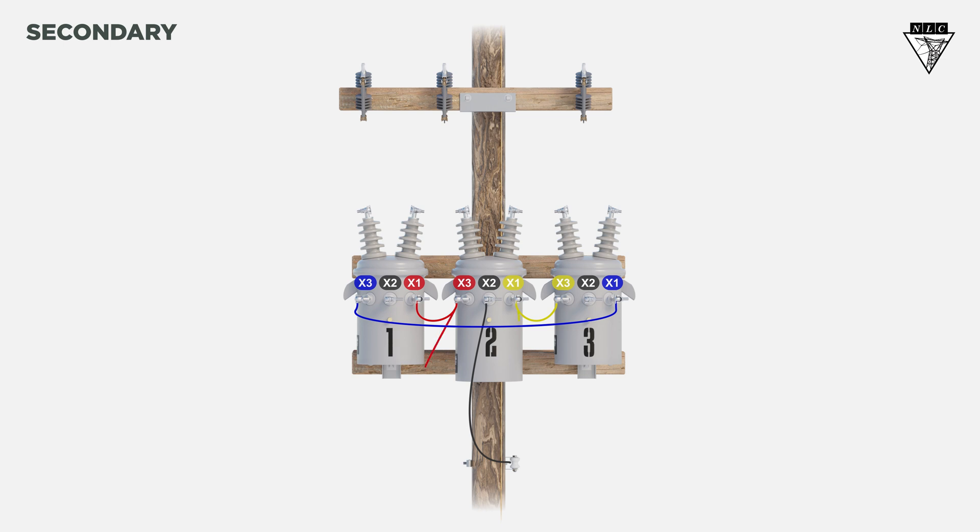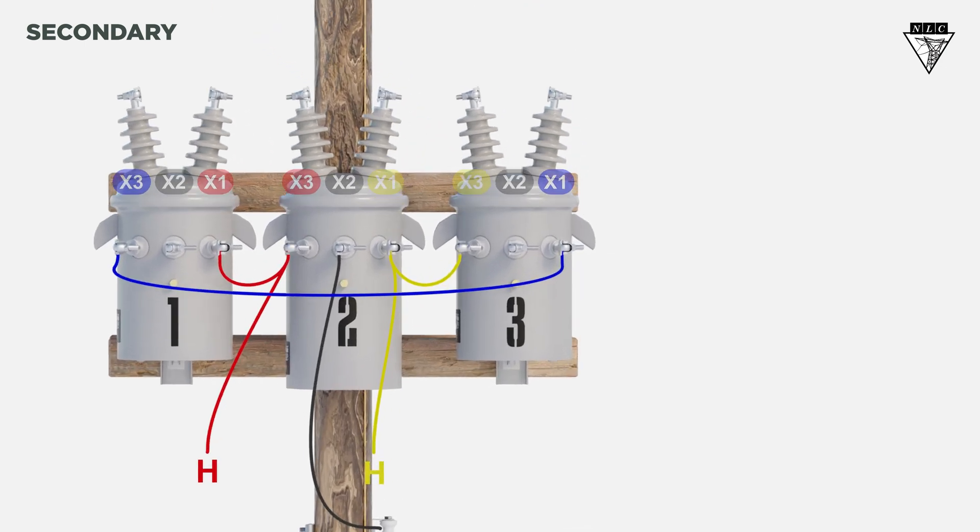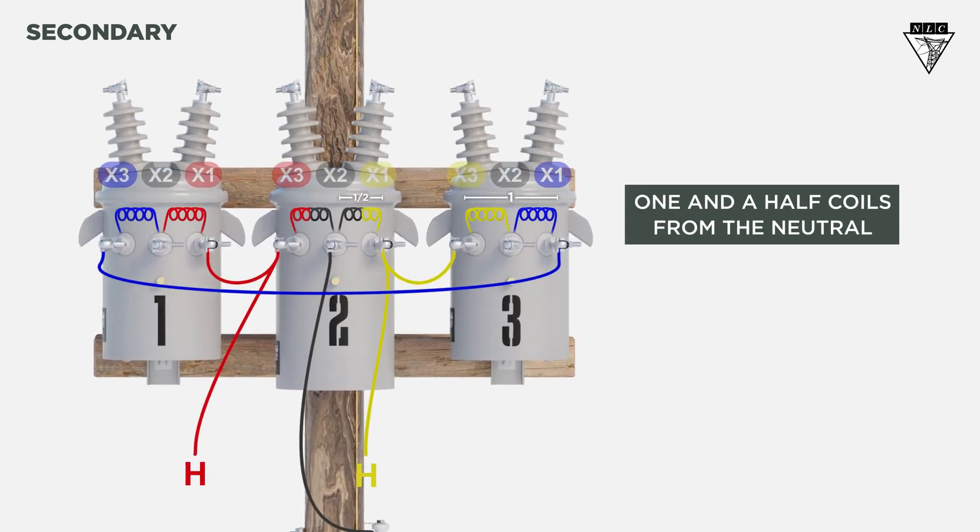Run the hot legs from the X3 and X1 of the lighter transformer. Finally, place the power leg one and a half coils from the neutral. For this example, we'll use the X1 bushing on the third transformer. This is now our power transformer.